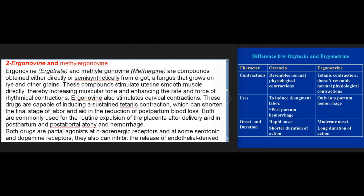Uterine stimulant #2: Ergonovine and Methylergonovine. Ergonovine (Ergotrate) and methylergonovine (Methergine) are compounds obtained either directly or semi-synthetically from ergot, a fungus that grows on rye and other grains. These compounds stimulate uterine smooth muscle directly, thereby increasing muscular tone and enhancing the rate and force of rhythmical contractions. Ergonovine also stimulates cervical contractions. These drugs are capable of inducing a sustained tetanic contraction, which can shorten the final stage of labor and aid in the reduction of postpartum blood loss. Both are commonly used for routine expulsion of the placenta after delivery and in postpartum and post-abortal atony and hemorrhage.